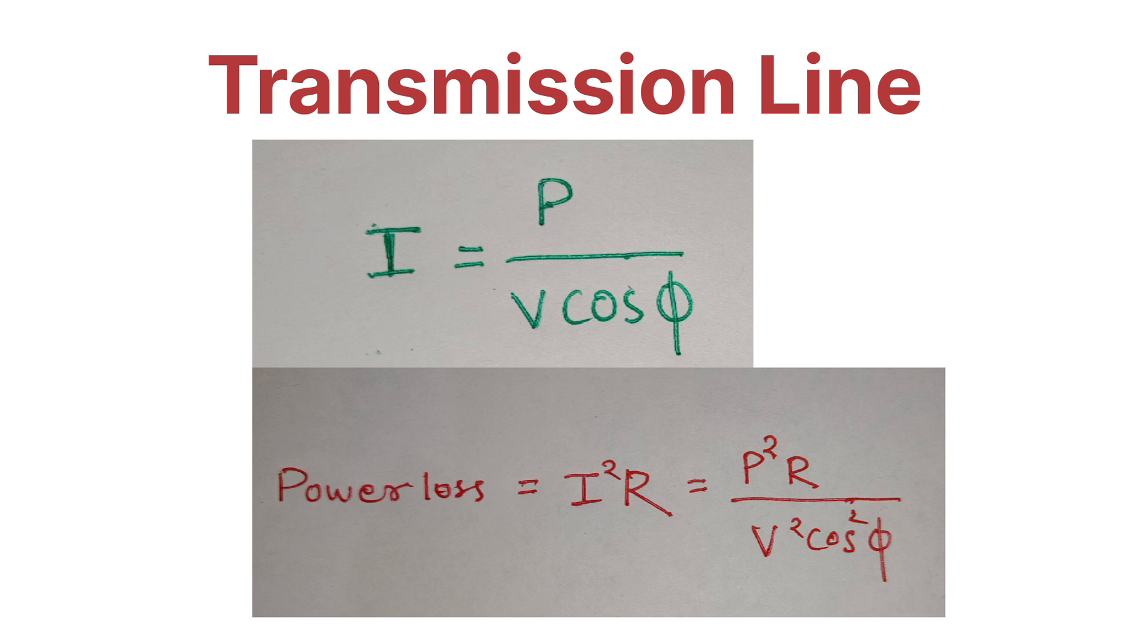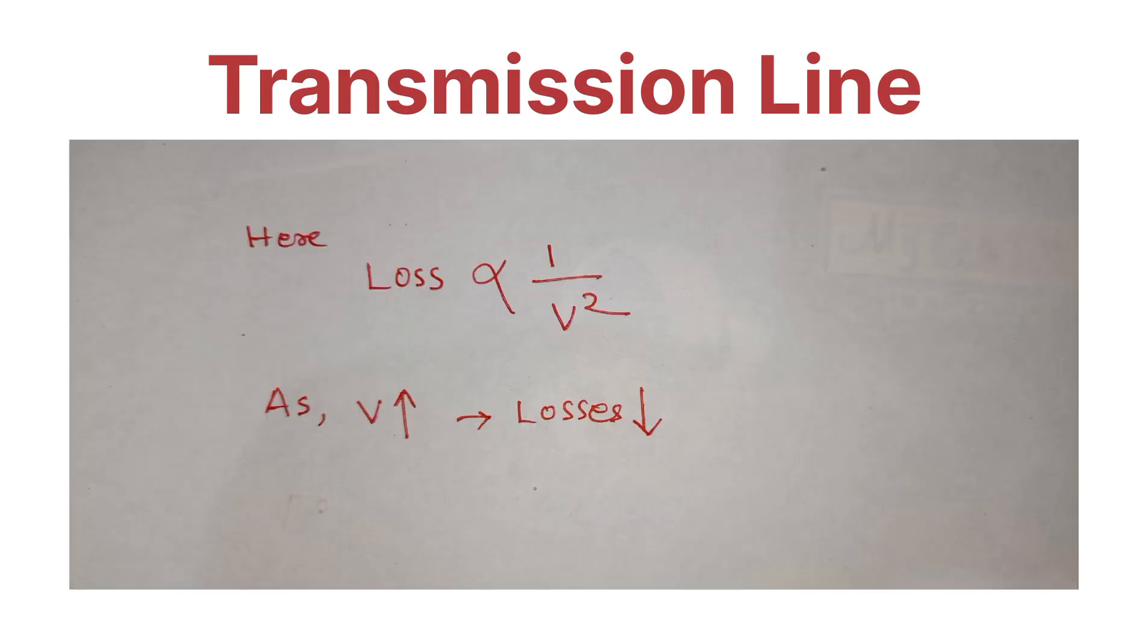Here we conclude that loss is inversely proportional to voltage squared, that is, losses are inversely proportional to 1 by V². As voltage increases, the losses decrease.